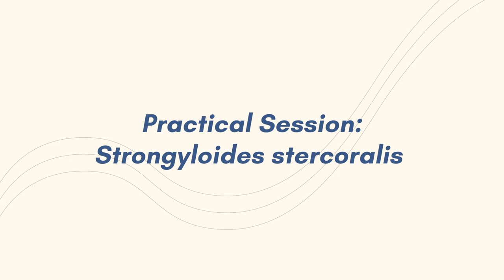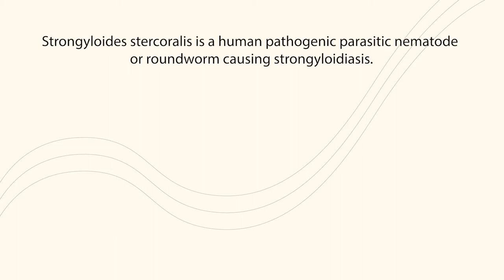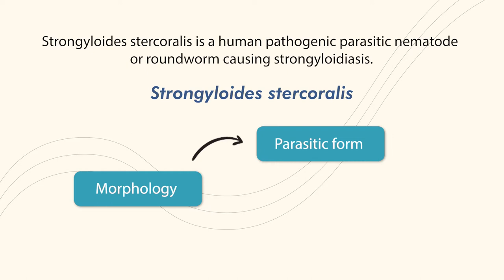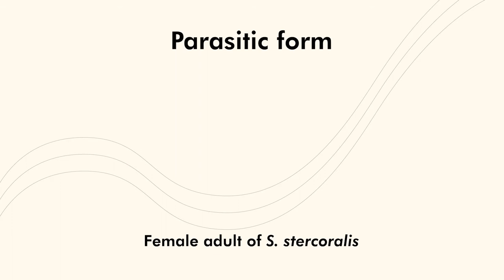Practical Session – Strongyloides stercoralis. Strongyloides stercoralis is a human pathogenic parasitic nematode or roundworm causing the disease called Strongyloidiasis. In this session, we will learn the morphology of the Strongyloides stercoralis worm, both in parasitic and free-living forms.